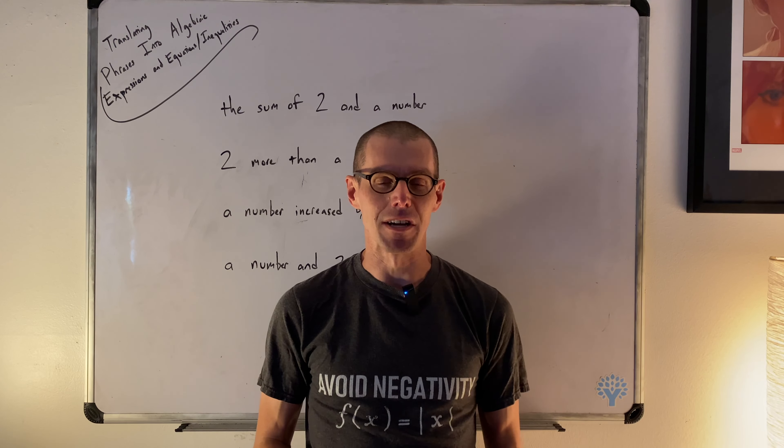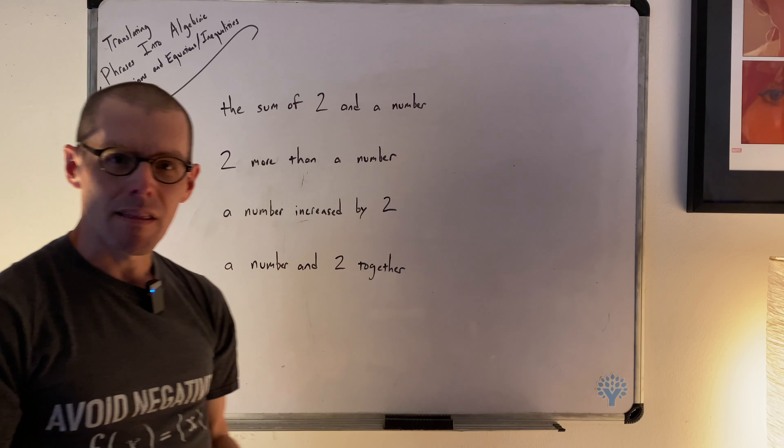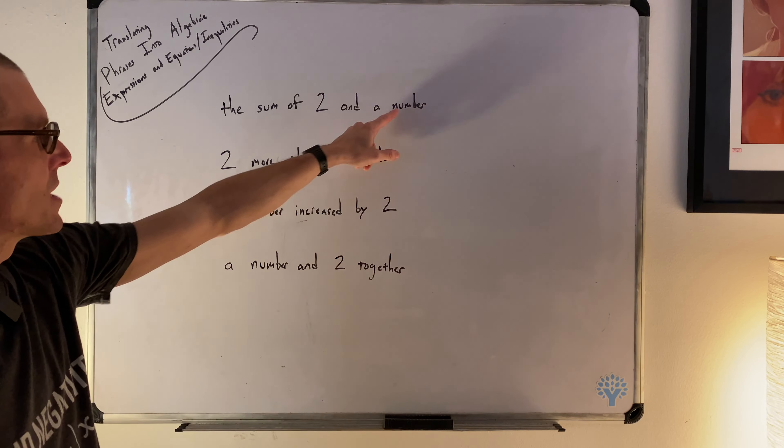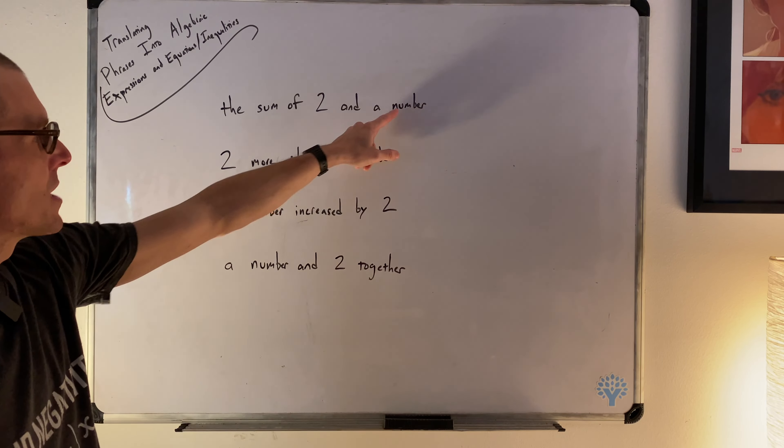The sum of two and the number. Sum indicates addition — it's the result of addition. So the sum of what? The number two and a number. Whenever we refer to 'a number' without being specific, that's where we put our variable, because a variable often stands in place of a number. So wherever you see 'a number' throughout this video, we're referring to our variable.